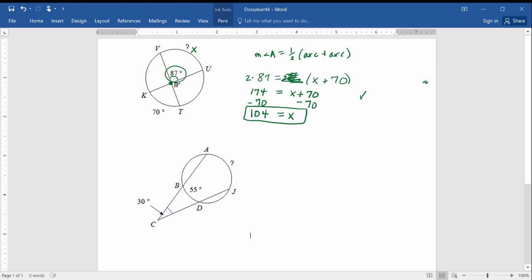Now, if you want to double-check that, you could, because we're really good usually using the formula to get the angle, but maybe feel a little bit unsure about the other direction. So, why don't we just try it and see if we get 87 for an answer when we plug our answer in. So, one-half of 104 plus 70.